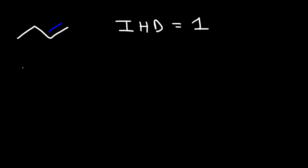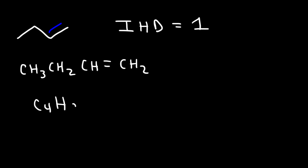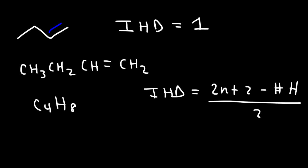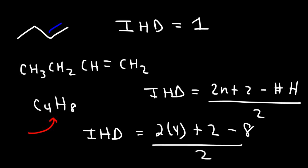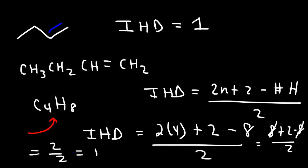We can write the chemical formula for 1-butene as CH3CH2CH=CH2, giving us four carbons and eight hydrogen atoms. The degree of unsaturation formula is (2n + 2 − H) / 2, where n is the number of carbon atoms. So: (2×4 + 2 − 8) / 2 = (8 + 2 − 8) / 2 = 2/2 = 1. A double bond has an IHD of 1.